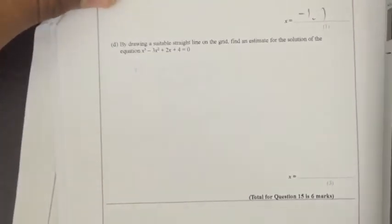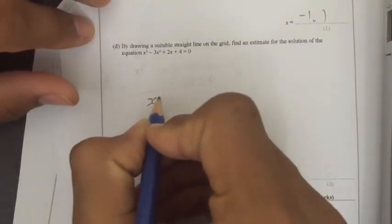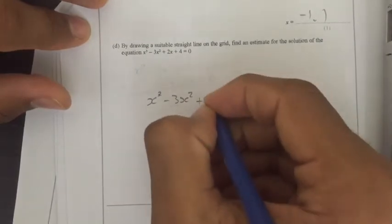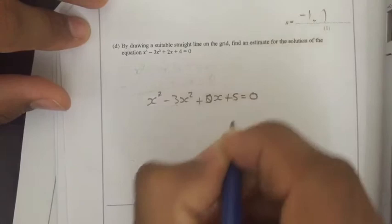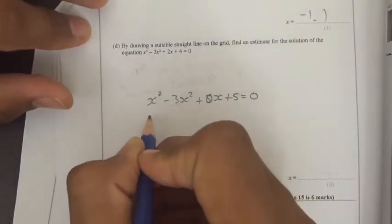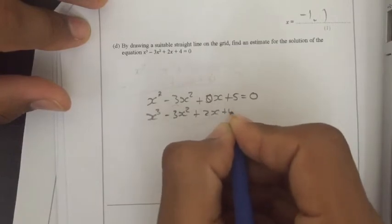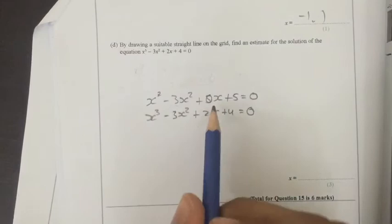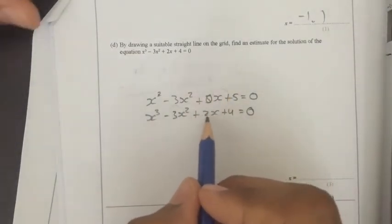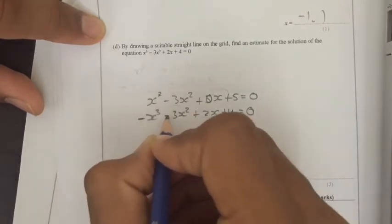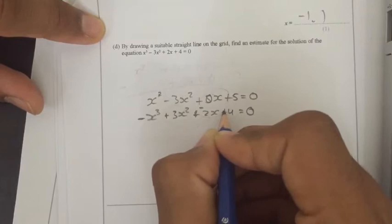Next question is, by drawing a suitable straight line on the grid, find an estimate for the solution of the equation X cubed minus 3X squared plus 2X plus 4 equals 0. Again, pretty simple. All you have to do is get the original equation, X cubed minus 3X squared plus 5, or sorry, to make it simpler, let's just do plus 0X plus 5 equals 0. I'll explain why I put the 0X in a second. And now the new equation, X cubed minus 3X squared plus 2X plus 4 equals 0. Now the reason I put the 0X is so that the 2X fits in. All we have to do is subtract this equation. So we just reverse all the signs, so it's minus X cubed plus 3X squared minus 2X minus 4.